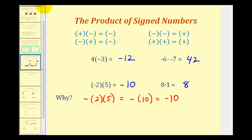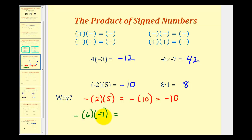For a quick justification of why a negative times a negative is positive: if we look at negative six times negative seven, you can think of this as the opposite of positive six times negative seven. We just learned that a positive times a negative is negative, so this would be the opposite of negative 42. And the opposite of negative 42 would be positive 42.